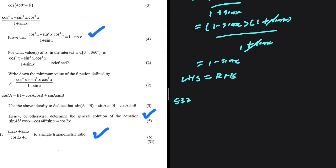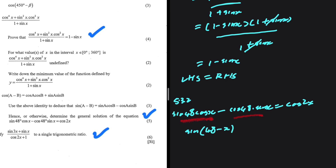In 5.3.2, we are supposed to find the general solution of sin48·cosx minus cos48·sinx equals cosx. Obviously we can simplify this — we know an identity that can help us. That expression is just equal to sin(48 − x). If you expand sin(48 − x), you get exactly that, so they are equal to each other. So sin(48 − x) equals cos2x.